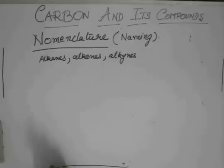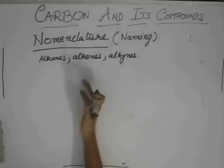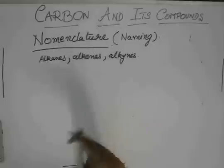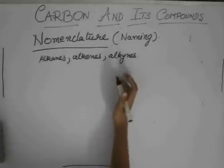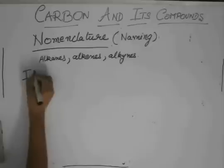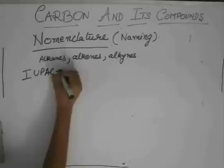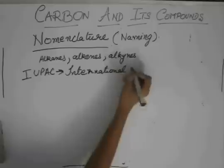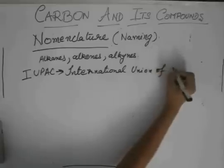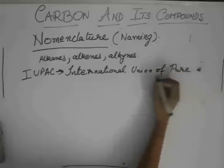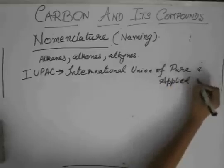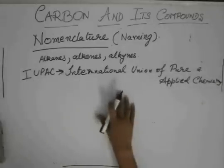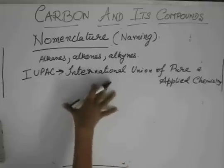But the problem arises when the compounds get more and more complicated. Like if there is a functional group, what would be its name? If there are branches, then what would be its name? If there are two or more functional groups, then what would be its name? So, for this, IUPAC, whose full form is International Union of Pure and Applied Chemistry, this IUPAC has set some basic rules of nomenclature.